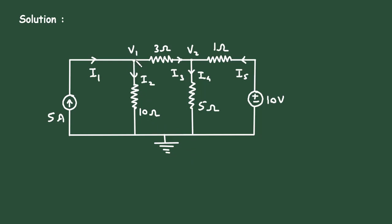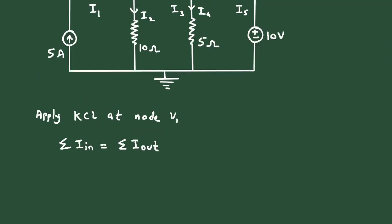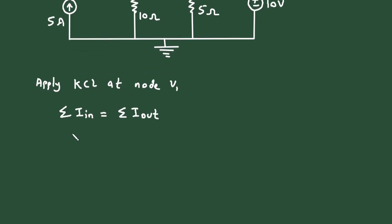Now let's apply KCL at node V1. KCL stands for Kirchhoff's Current Law. Now according to KCL, summation of all the current entering a node is equal to summation of all the current leaving the node, that is I-in equals I-out. Here at this node, the entering current is I1 and the leaving currents are I2 and I3. So we can write I1 is equal to I2 plus I3.